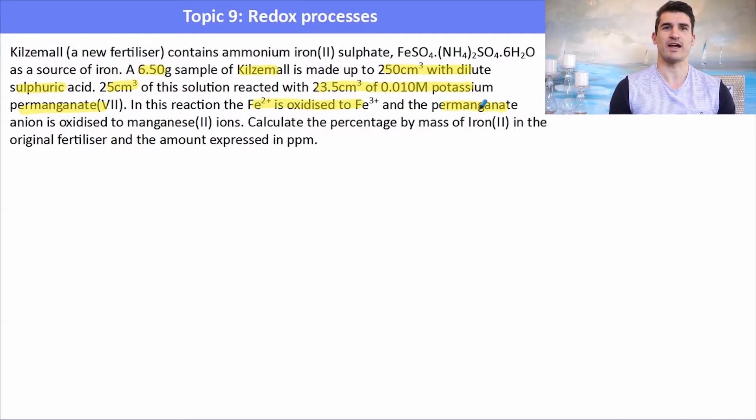25 centimeters cubed of this solution was reacted with potassium permanganate. And then they tell us what the reaction was. Calculate the percentage by mass of iron 2 in the original fertilizer and express in parts per million. Now what you need to do here is again write a chemical equation for the process. So have a go at doing that right now.